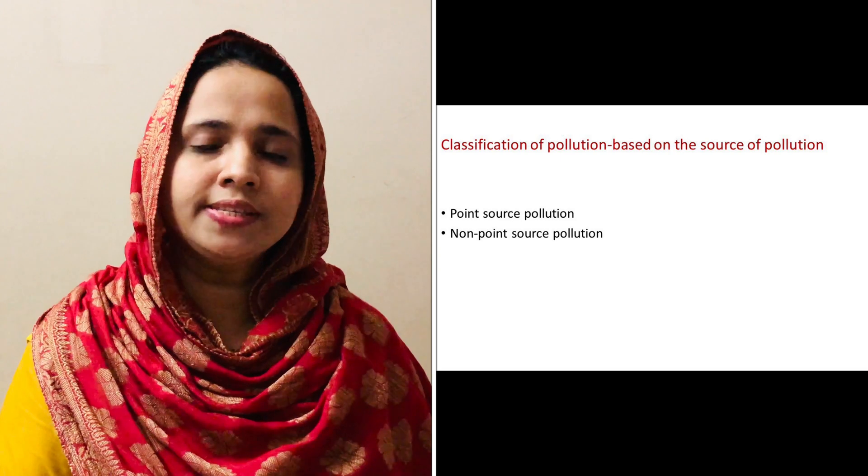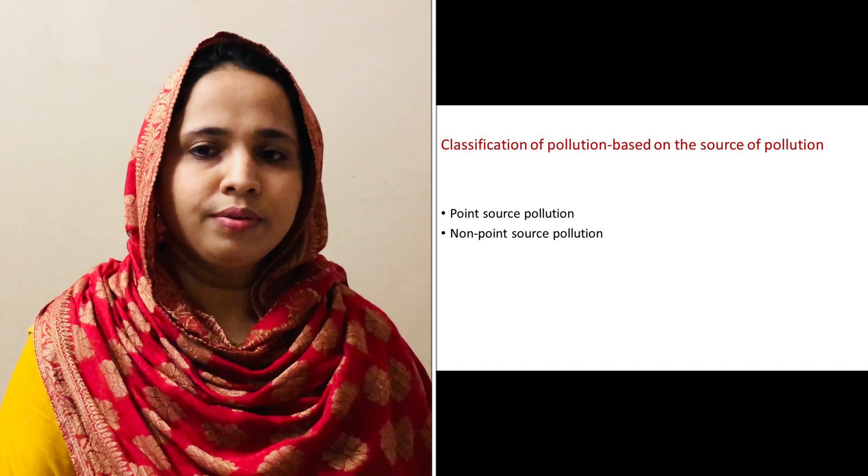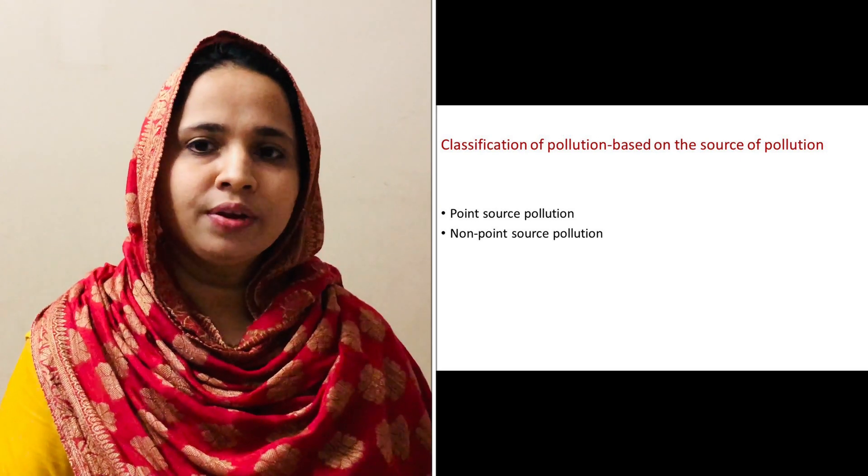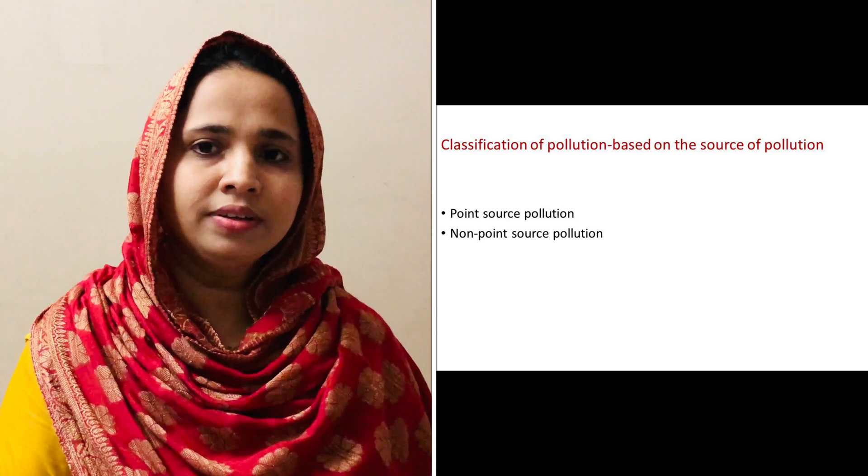A point source of pollution is the single identifiable source of pollution for air, water, noise, thermal or light pollution. For example, air pollution from an industrial source — here, industry is the point source. Or noise pollution from a jet engine — here, jet engine is the pollution source. The non-point source pollution is the pollution resulting from many sources. For example, agricultural runoff from different paddy fields, polluted runoff from agricultural areas draining into nearby water bodies. Here we have discussed the classification of environmental pollution.